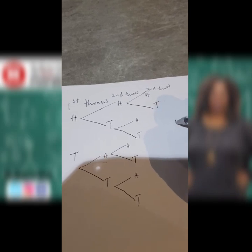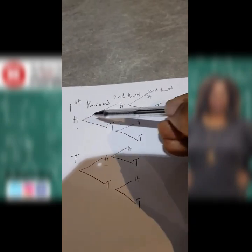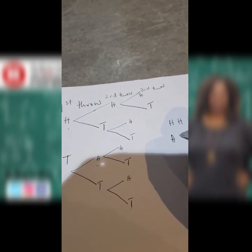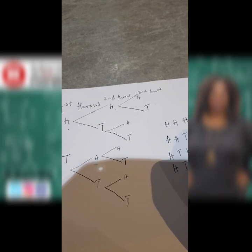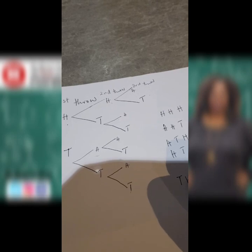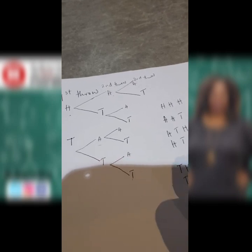The combinations are: head, head, head; head, head, tail; head, tail, head; head, tail, tail; tail, head, head; tail, head, tail; tail, tail, head; and tail, tail, tail.